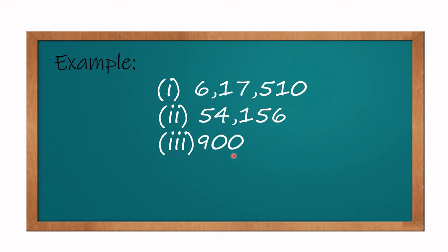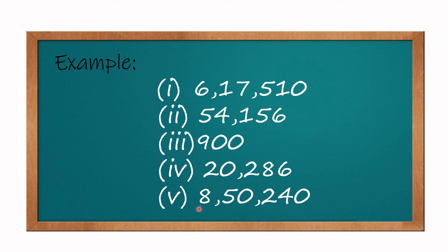Next, 900 - here the last digit is 0, so this number will be divisible by 10. Next, 20,286 - here the last digit is not 0, so this number will not be divisible by 10. Last example, 850,240 - here the last digit is 0, so this number will be divisible by 10.